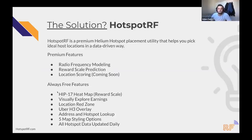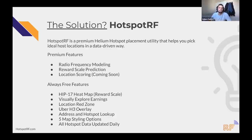The free features are similar to Helium Place. One addition is the HIP-17 heat map — I believe we're the only tool that has this currently live. It shows reward scaling in cities. You can also visually explore earnings by clicking on a hotspot to see its 24-hour and 7-day rewards. We also show the location red zone, allow you to overlay all the Uber H3 hex data, search by address and hotspot lookup, and offer five map styling options. We update all hotspot data daily and are about to update that to hourly.